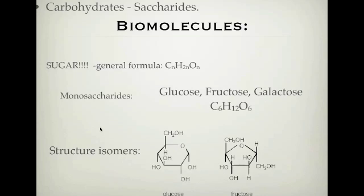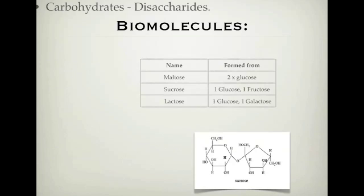Let's look at disaccharides. Disaccharides are basically two monosaccharides joined together. There are three we mainly deal with: maltose, which is two glucoses joined together; sucrose, which is one glucose and one fructose joined together; and lactose, which is one glucose and one galactose joined together. We're going to focus on sucrose, as it is probably the most important for VCE studies.